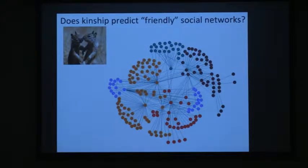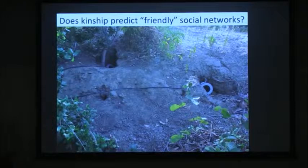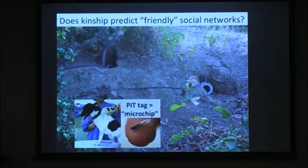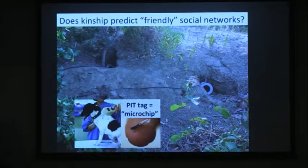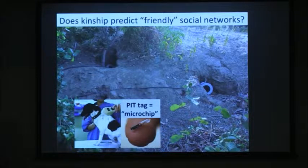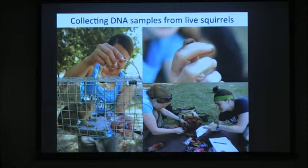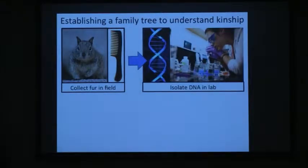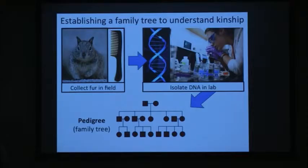We track patterns of association through data loggers placed at burrow entrances. Squirrels have microchips — like you might put on your dog — and are scanned automatically as they go in and out of burrows, like scanning at a grocery store. This lets us build up associations to construct social networks. We go out with many students, collect DNA samples, hormone samples, and other data. We're building up a pedigree from hair and other DNA samples, which will tell us about kinship relationships.